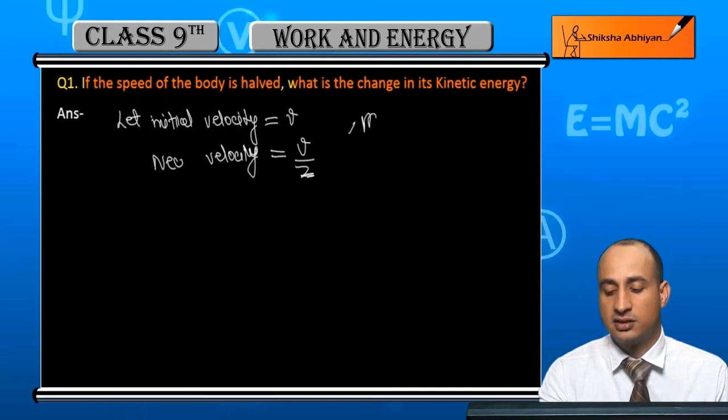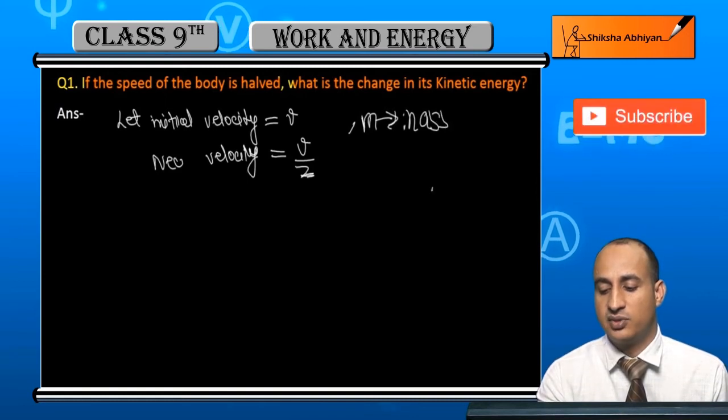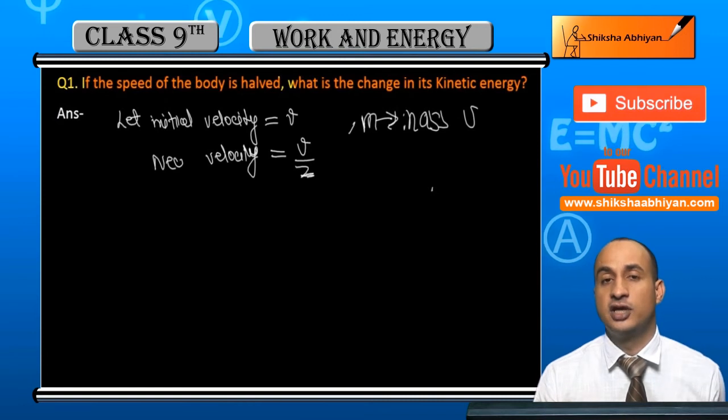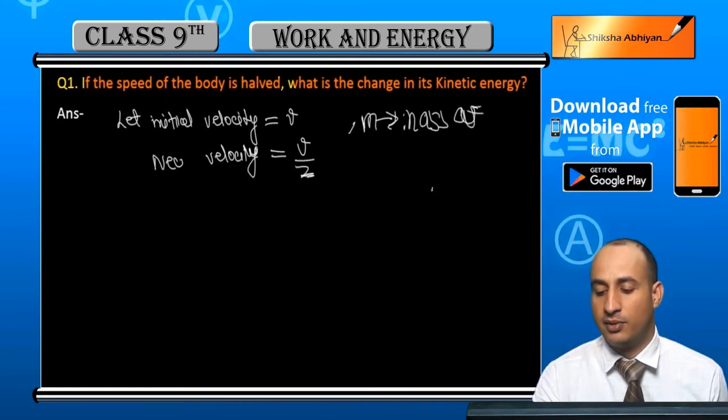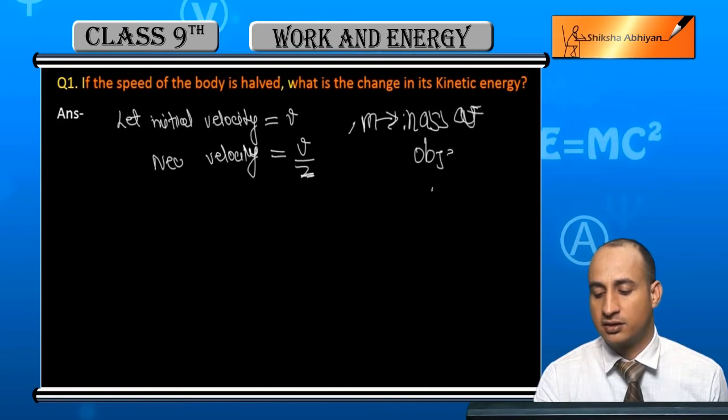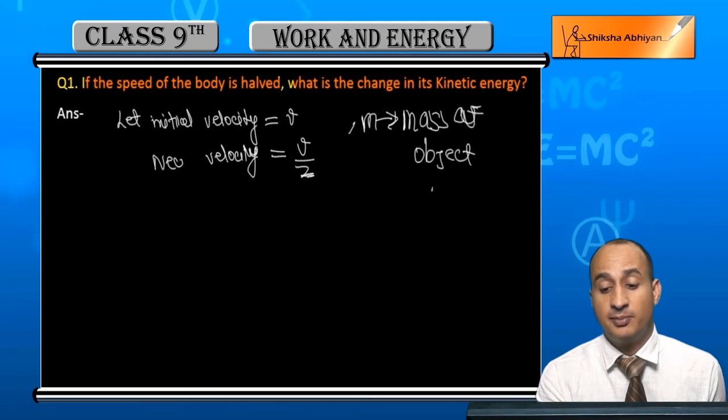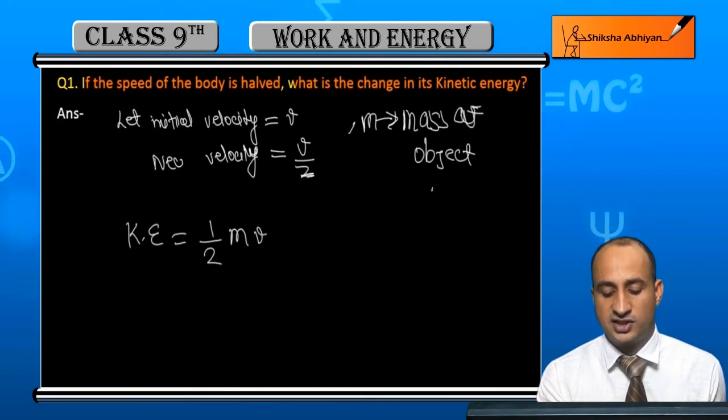Let m be the mass of the object. Now starting with the kinetic energy, the initial kinetic energy is 1/2 mv².